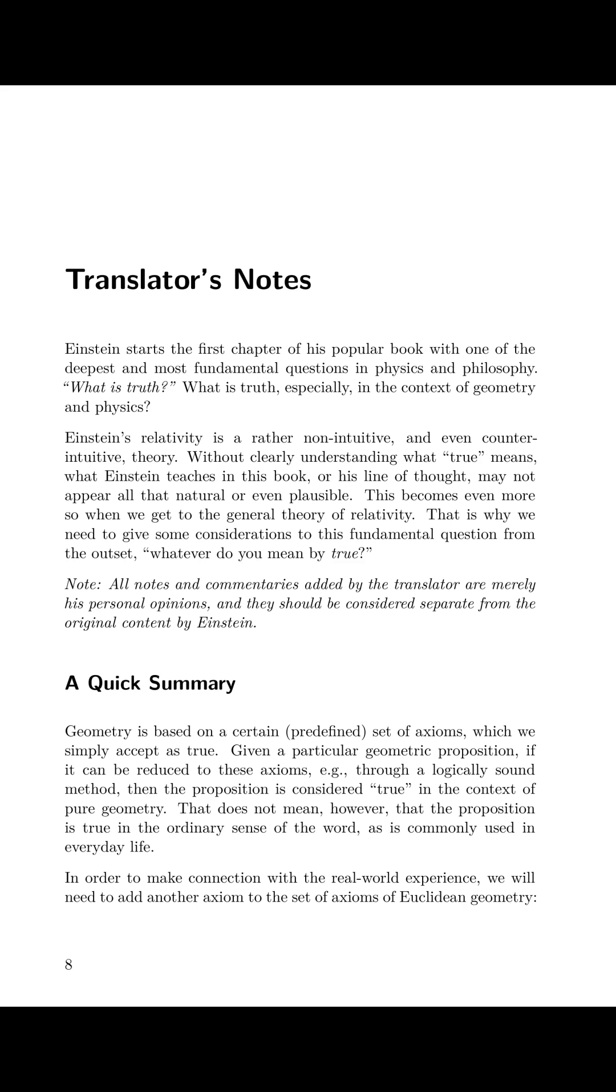The Translator's Notes. Einstein starts the first chapter of his popular book with one of the deepest and most fundamental questions in physics and philosophy: What is truth? What is truth, especially in the context of geometry and physics? Einstein's relativity is a rather non-intuitive and even counterintuitive theory. Without clearly understanding what true means, what Einstein teaches in this book or his line of thought may not appear all that natural or even plausible. This becomes even more so when we get to the general theory of relativity. That is why we need to give some considerations to this fundamental question from the outset: whatever do you mean by true?